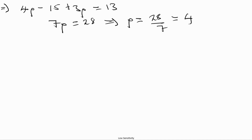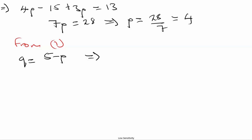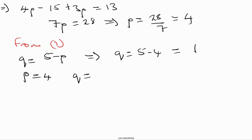From the first equation, we know that q = 5 − p. Therefore q = 5 − 4 = 1. So we have the value of p, which equals 4, and the value of q, which equals 1.